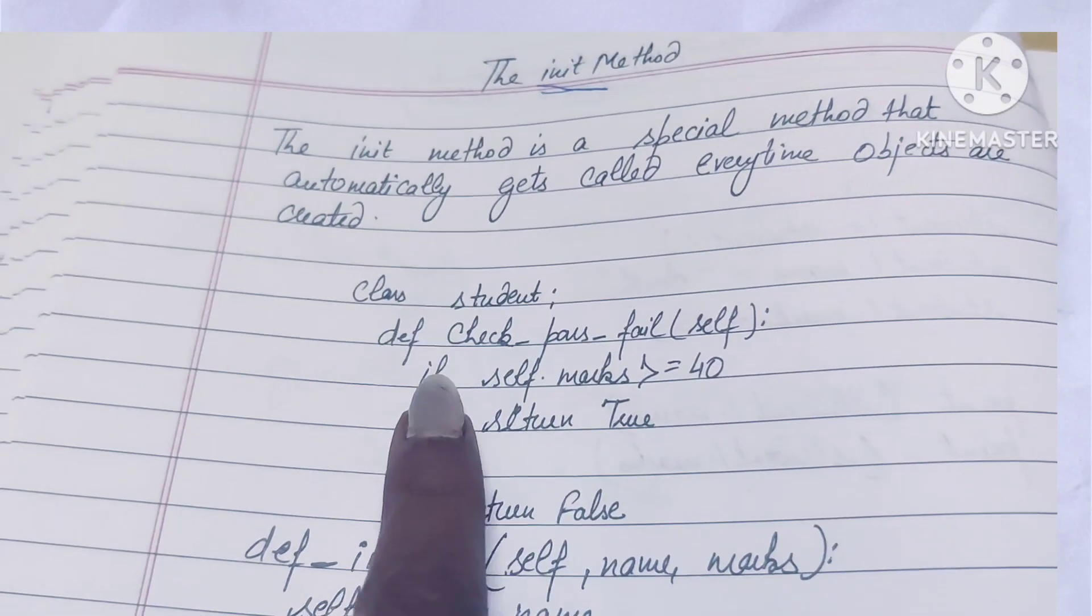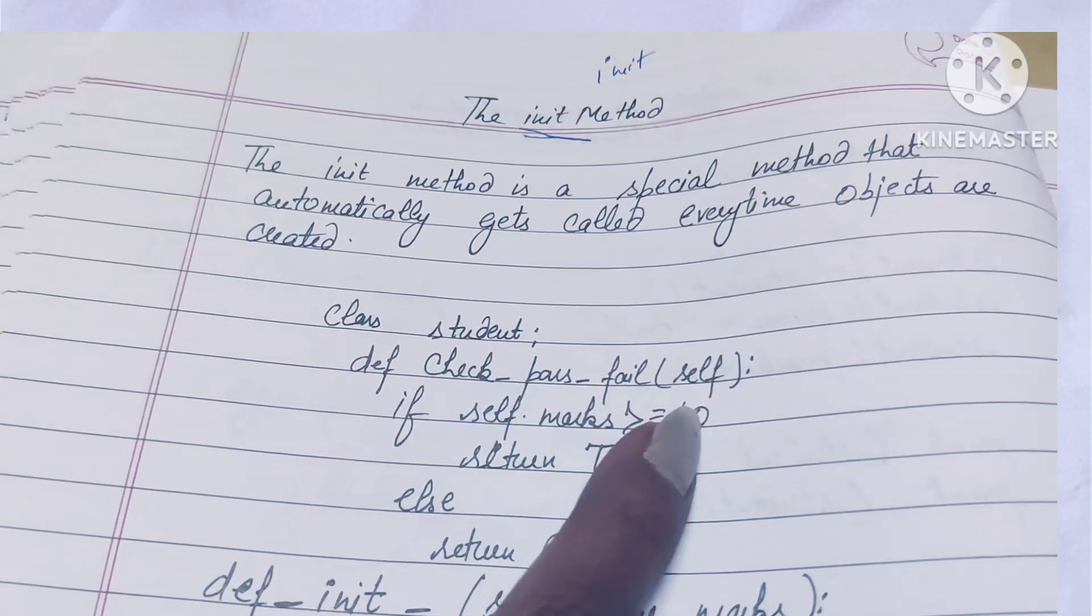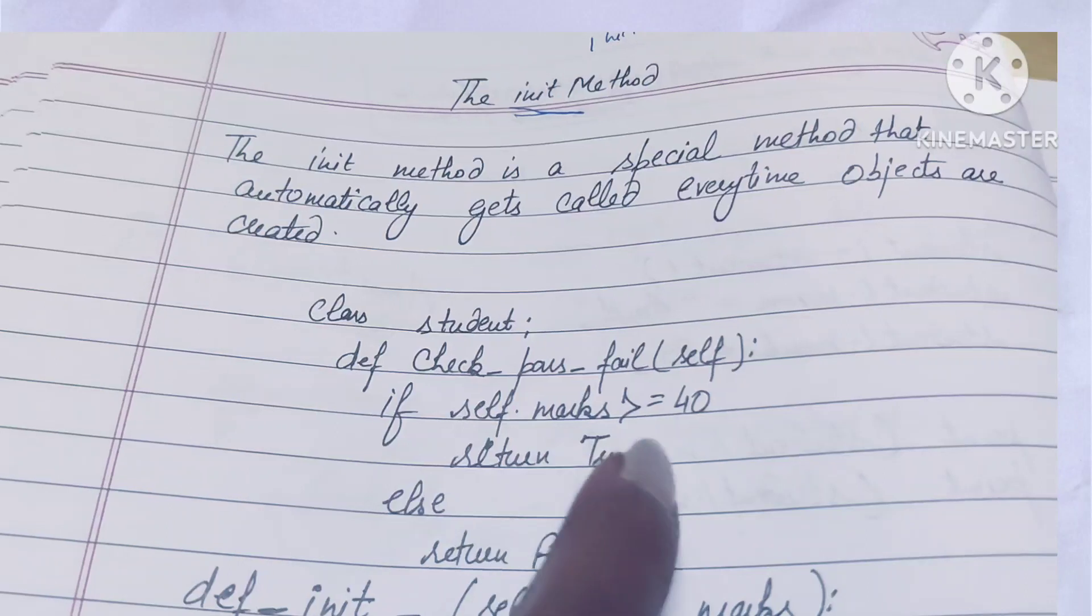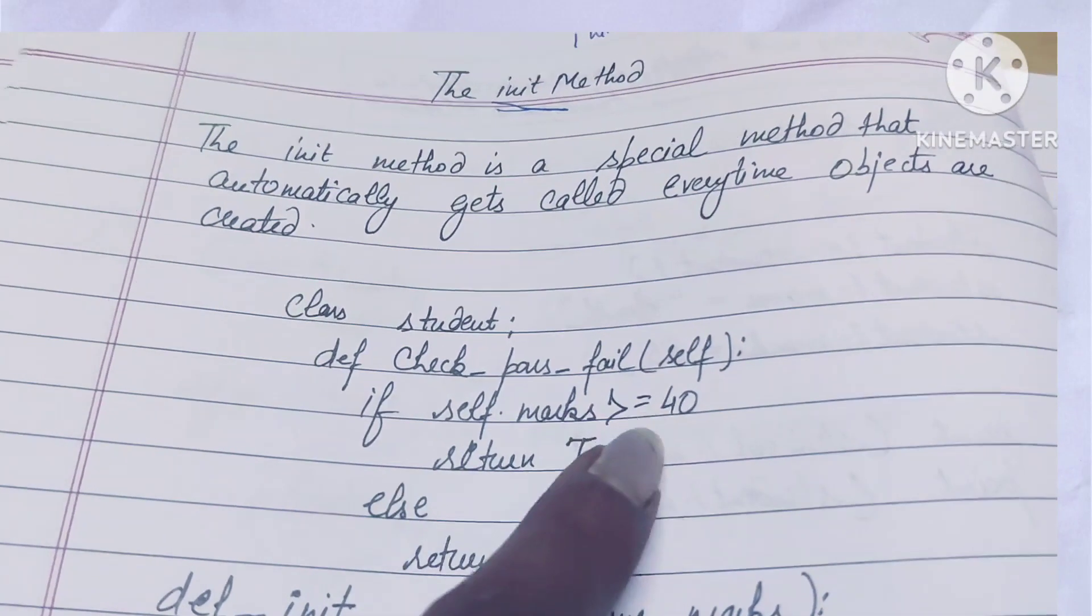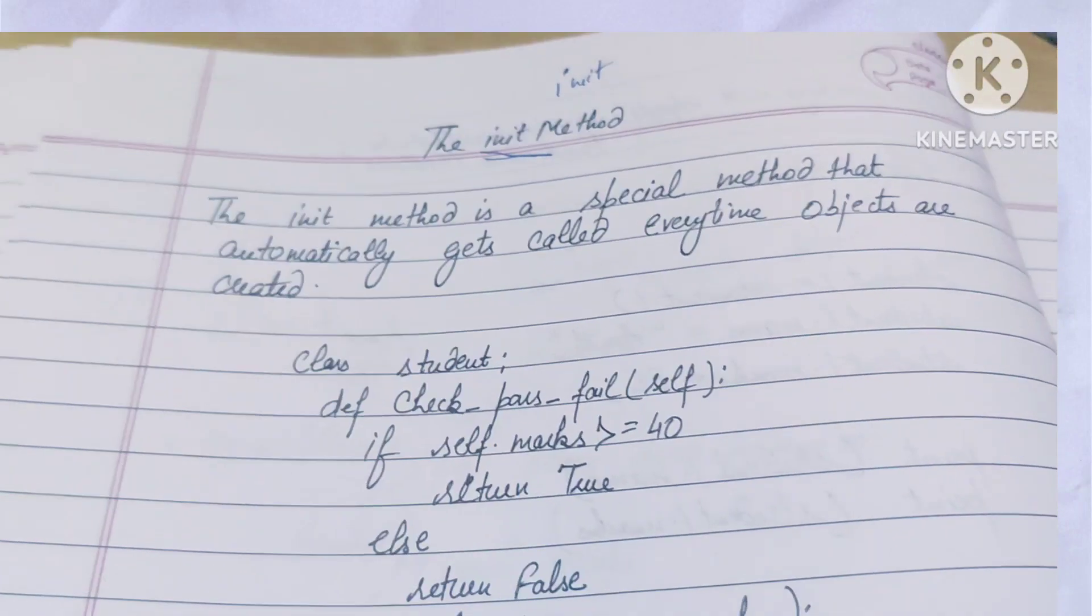The class is student. Define is the function name, check_pass_fail. This is the condition we have used. If self.marks greater than or equal to 40, then return true, else return false.